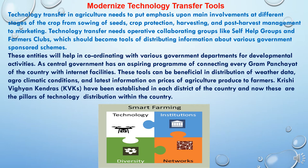These tools can be beneficial in distribution of weather data, agro-climatic conditions, and latest information on prices of agricultural produce to the farmers. Krishi Vigyan Kendras (KVKs) have been established in each district of the country, and now these are the pillars of technology distribution within the country.